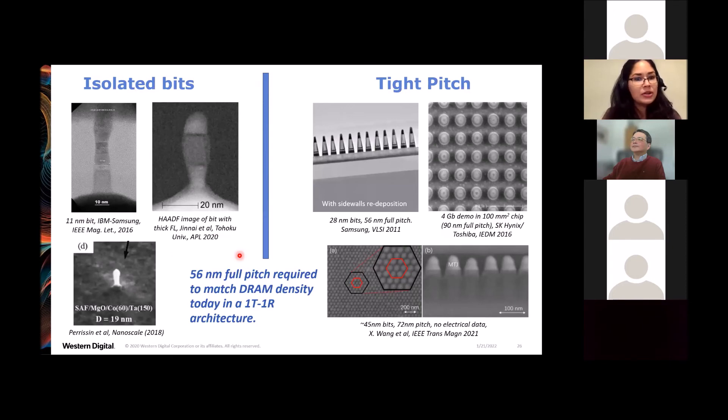Very small, 20 nanometers or less, but these are isolated bits. There have been very few reports of tight pitch arrays. And one very common problem of folks trying to make MRAM at tight pitch is that during the etching process, you get redeposition of the etched material onto the sidewalls and it causes shorting of your bits. That's an example shown in this demo by Samsung in 2011, so you don't get any electrical data. The best demo we've seen to date was from SK Hynix and Toshiba in 2016. They did a 4 gigabit demo at 90 nanometer full pitch with electrical data. However, if you want to be competitive with MRAM density, you have to match 56 nanometer full pitch. That would be for a 1T1R architecture.